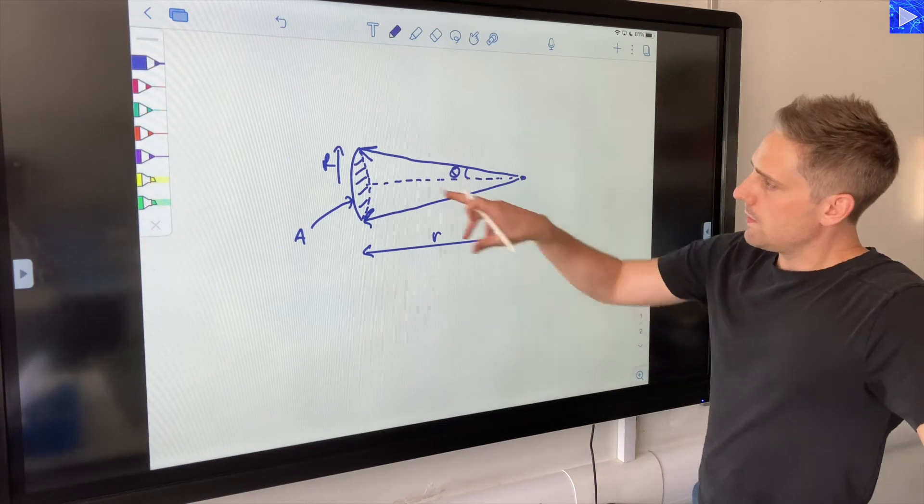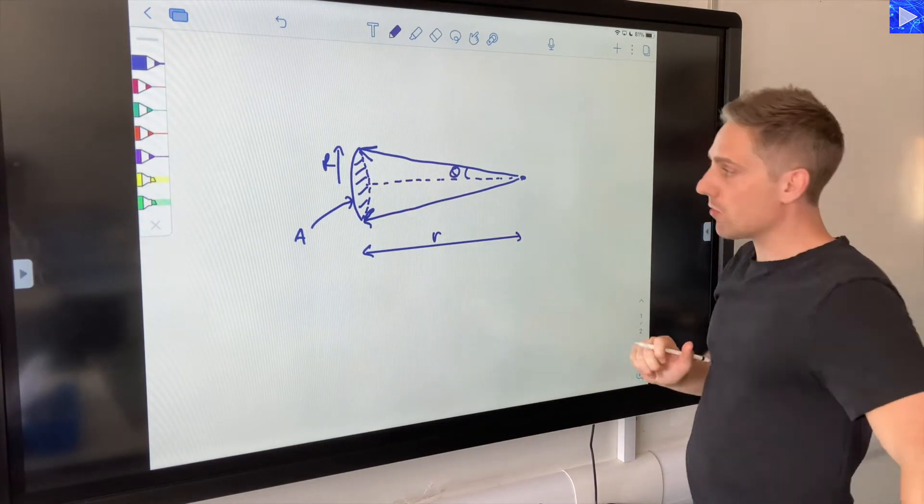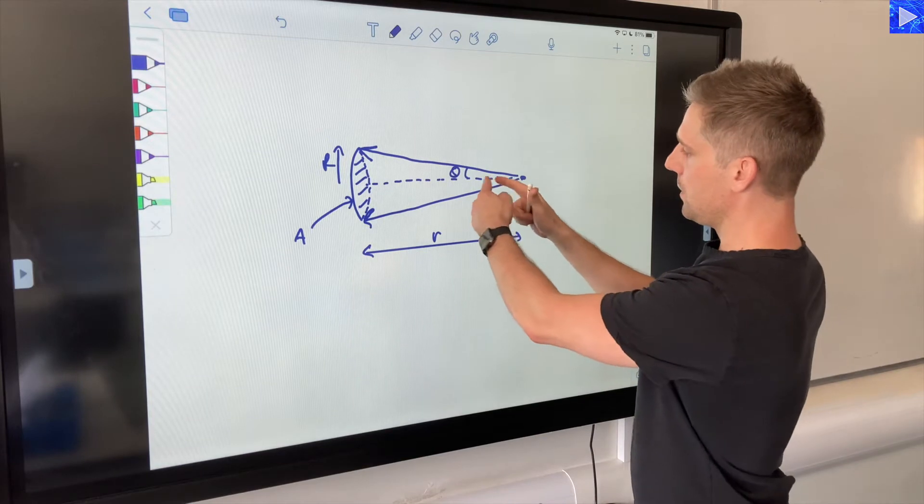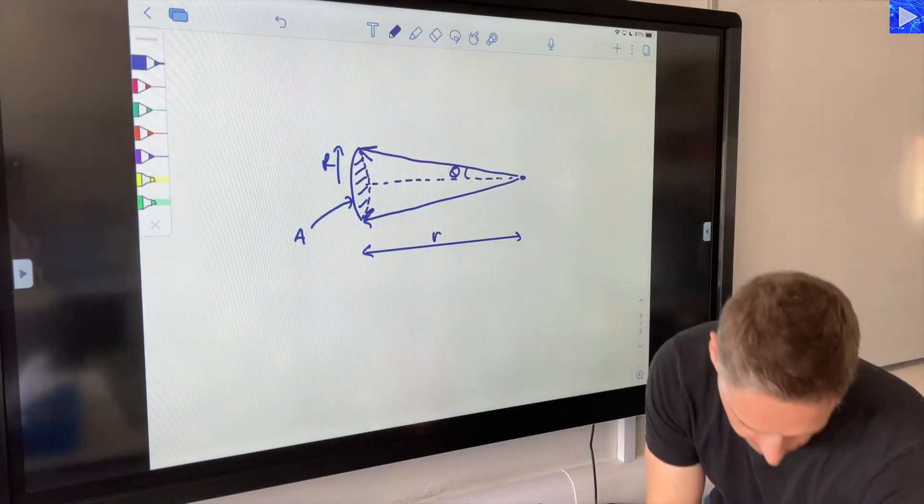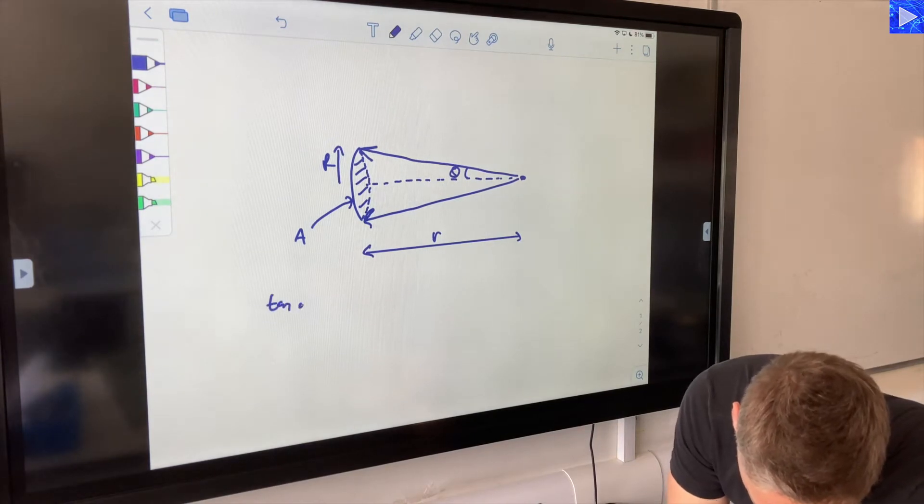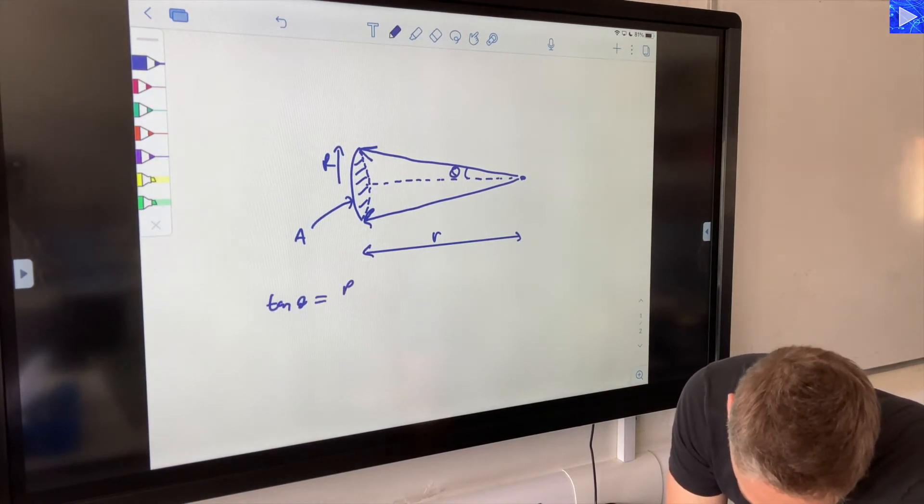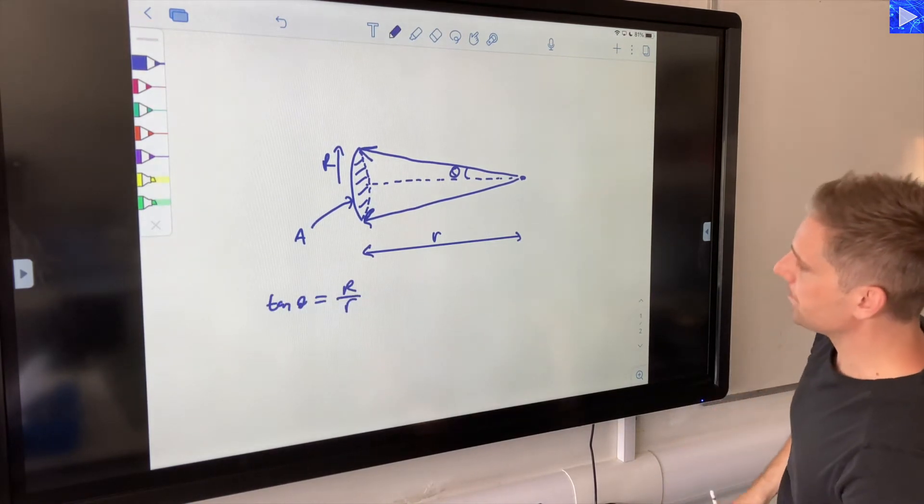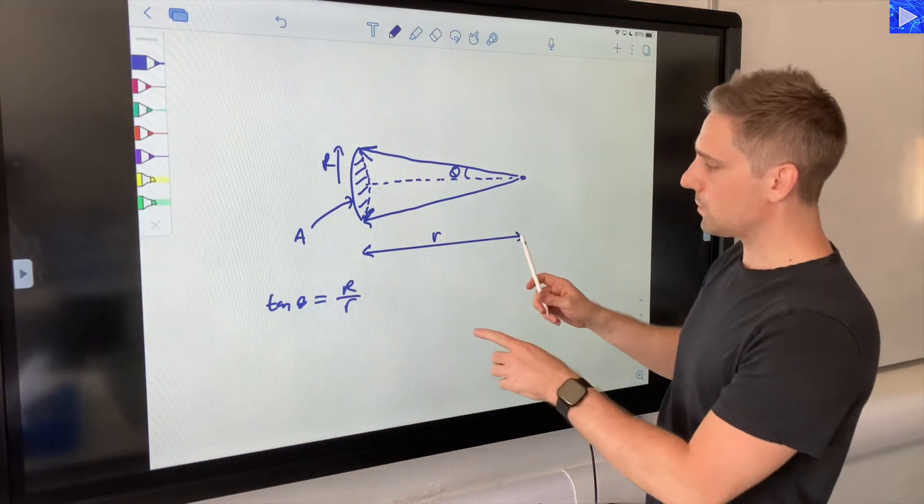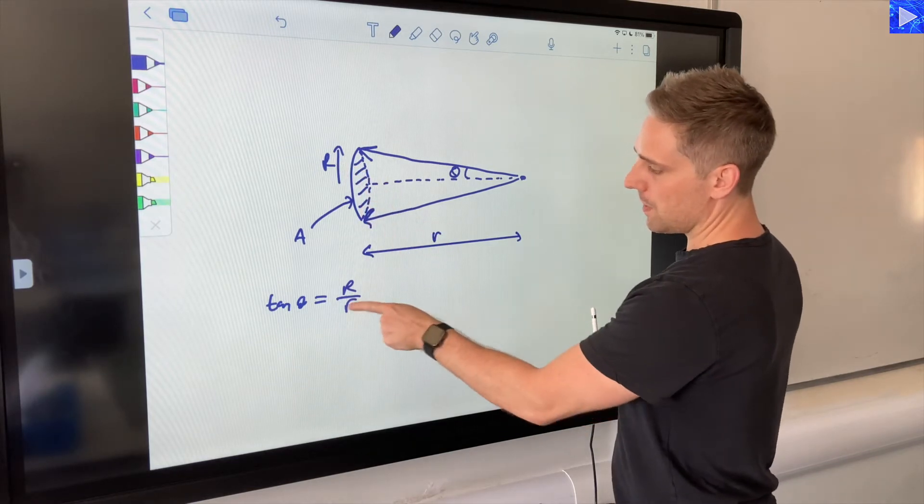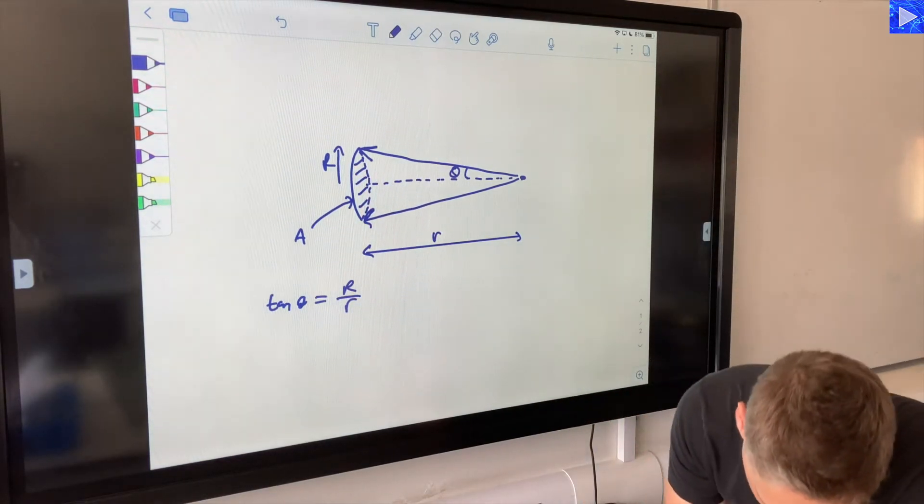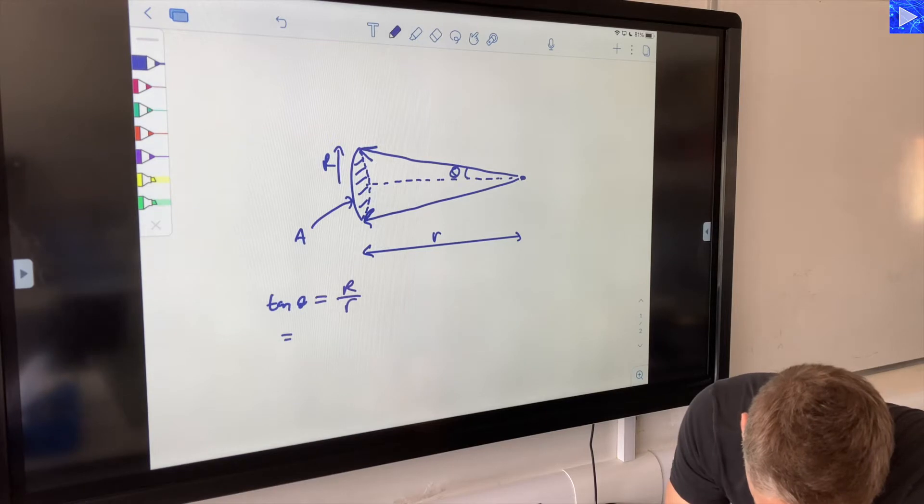These two r's are related to each other, aren't they? This is the adjacent side, this is the opposite of a right angle triangle. So we can say that tan theta is the opposite divided by the adjacent. What that enables us to do is get R, large R, in terms of small r and theta.